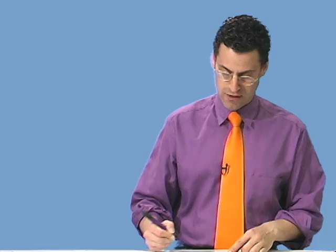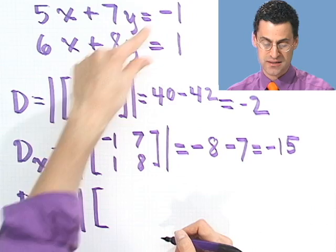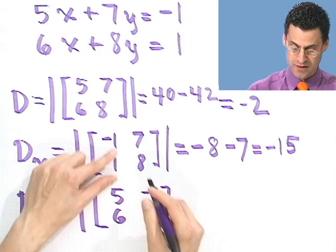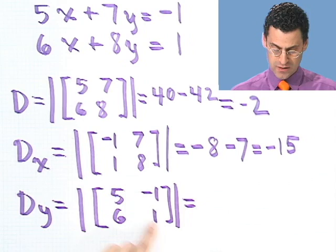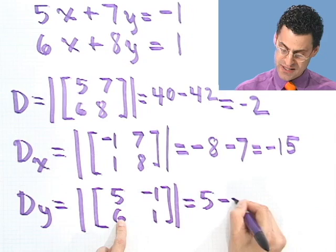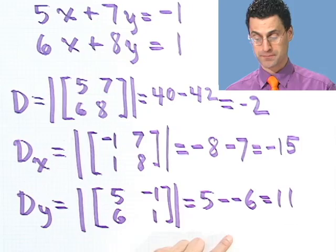Cool. One last one. D sub y. Notice that these things aren't very taxing at all. This is not killing me. Even me with my lousy arithmetic skills can sort of keep up. Here what I do is I replace the y column by these numbers. So I still have the 5, 6 column, but now I put in the minus 1, 1. You see how I just sort of insert, in this case, this in the x column, this in the y column. What does this equal? Well, 5 times 1 is 5, minus, and then minus 1 times 6 is negative 6. You've got to be careful with these signs. 5 minus minus 6 is actually 11, not negative 1.